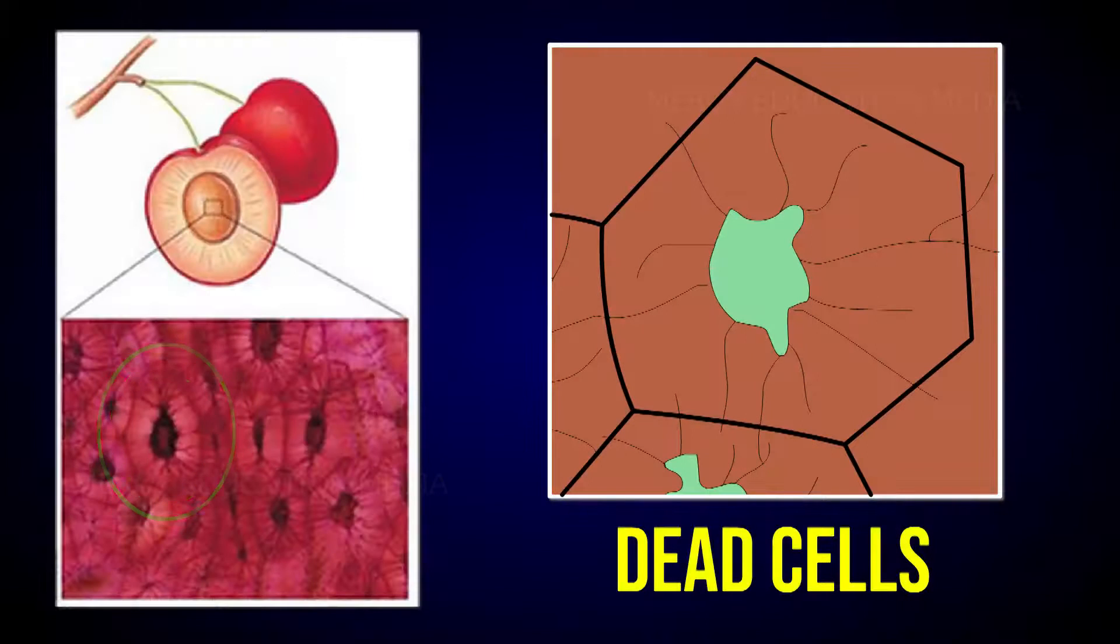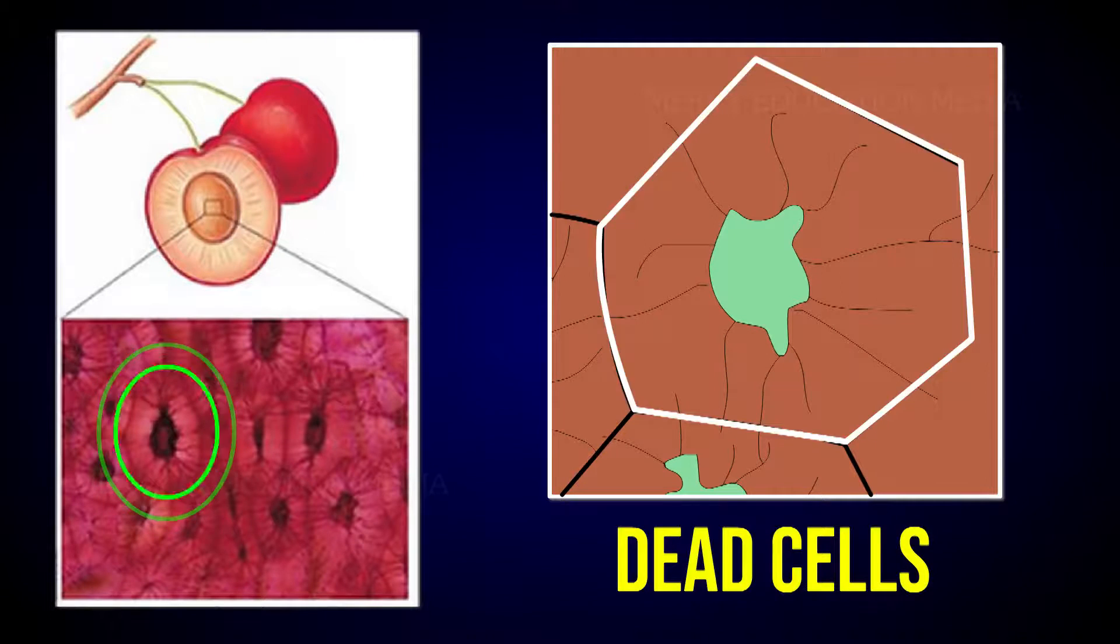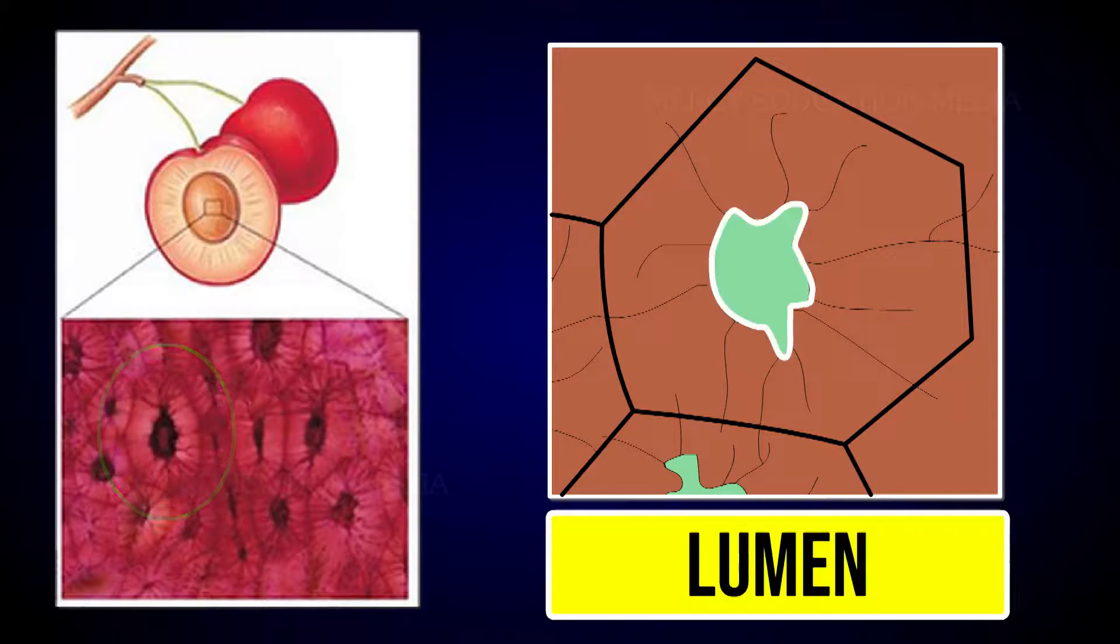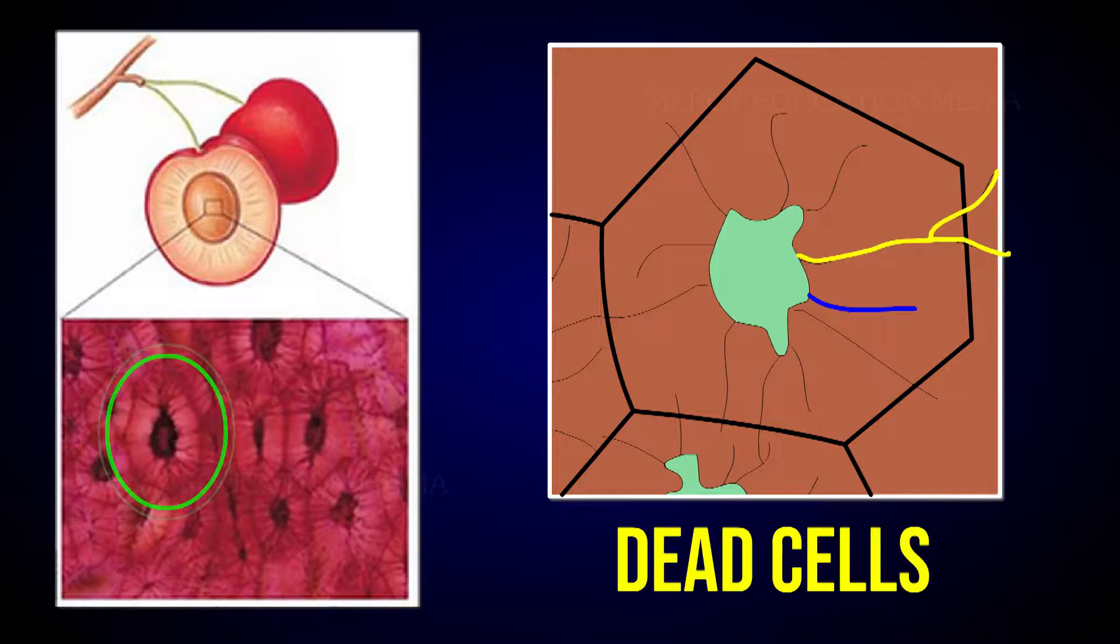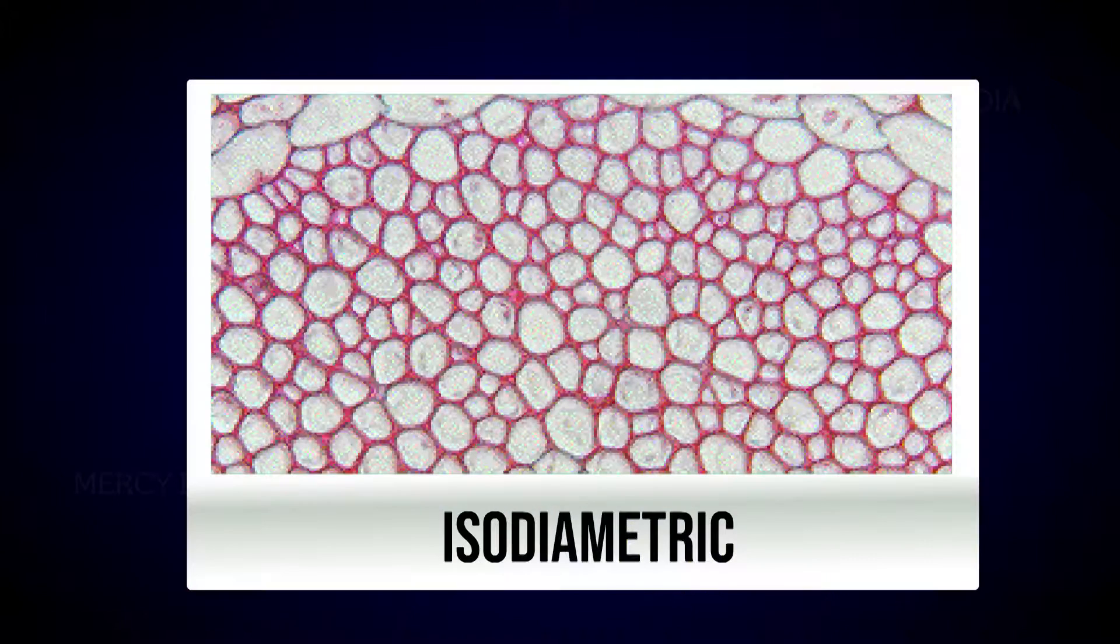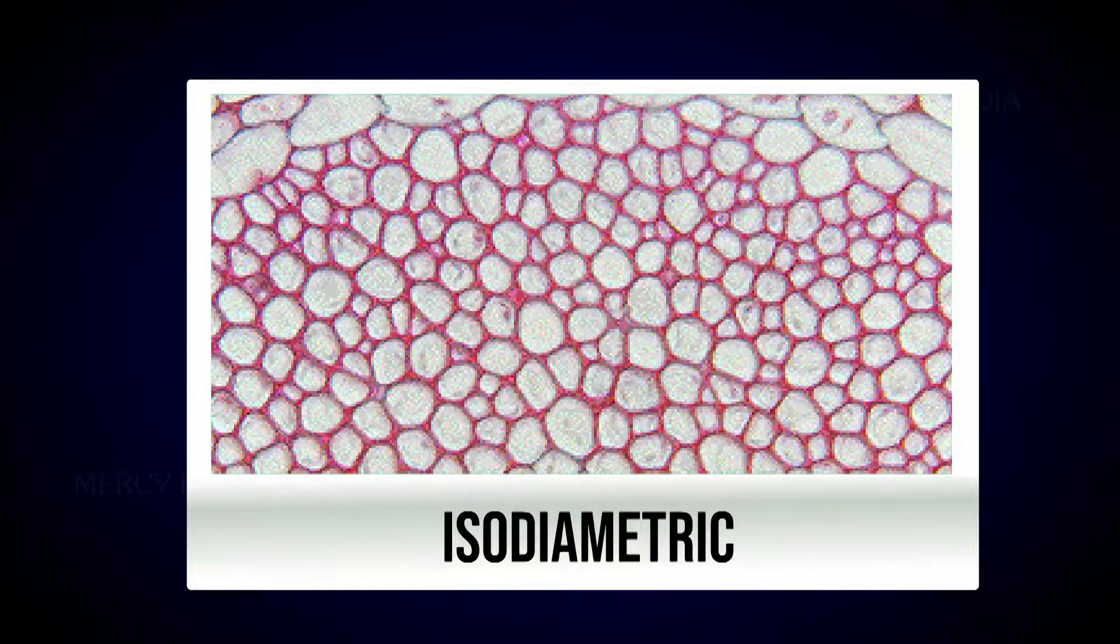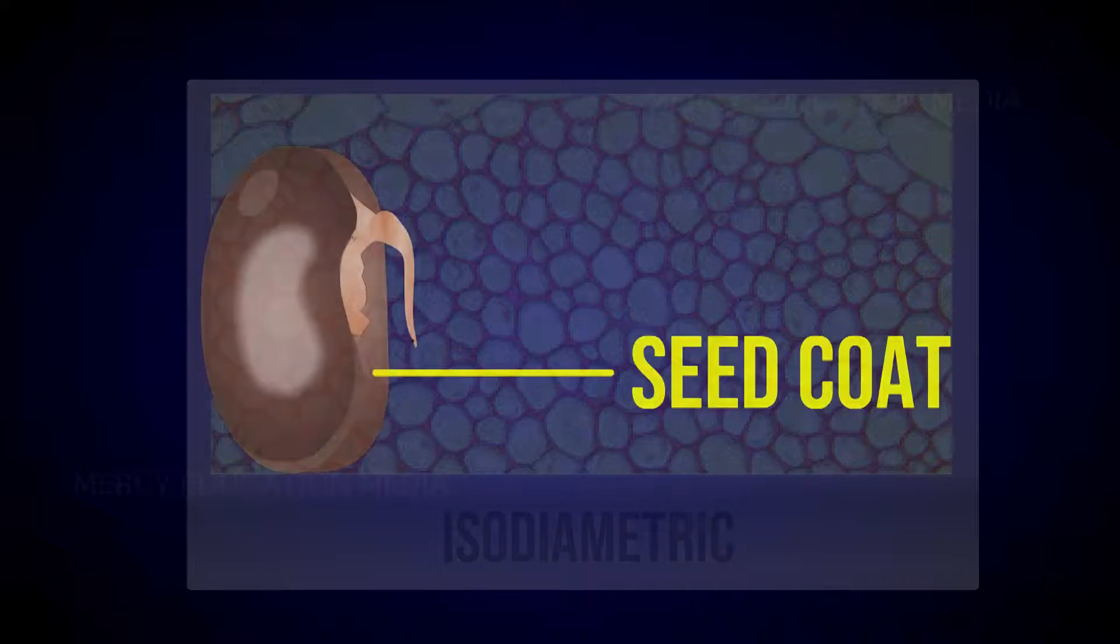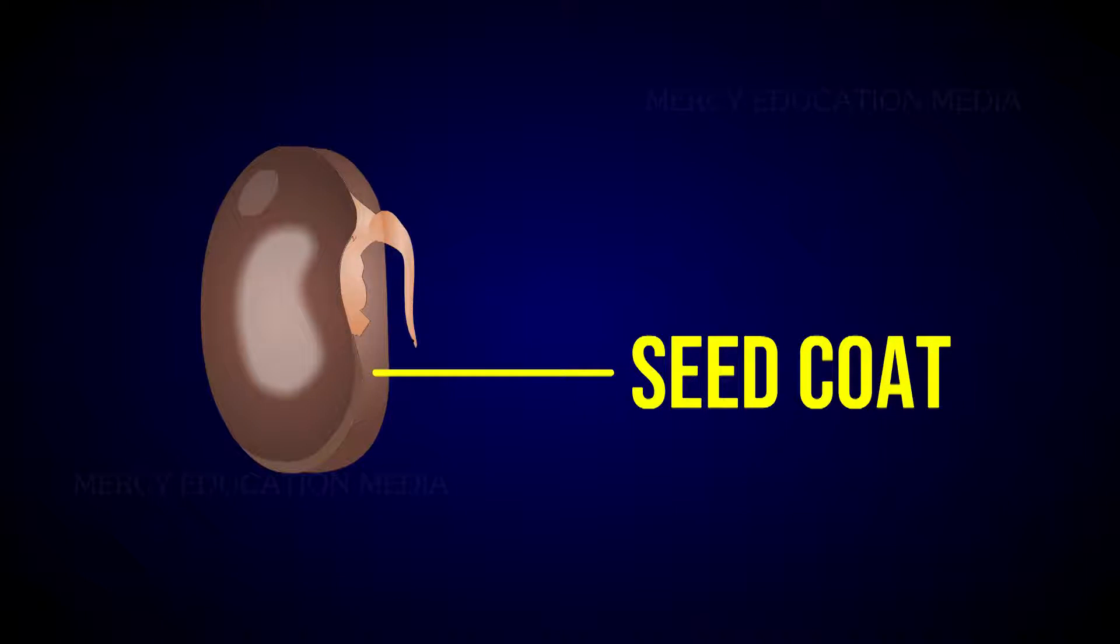Scleroids are dead cells. They vary greatly in shape and thickness. The cell wall is very thick due to lignification. Lumen is very much reduced. The pits may be simple or branched. Usually scleroids are isodiametric, but in some plants they are elongated. They are responsible for the rigidity of the seed coat.